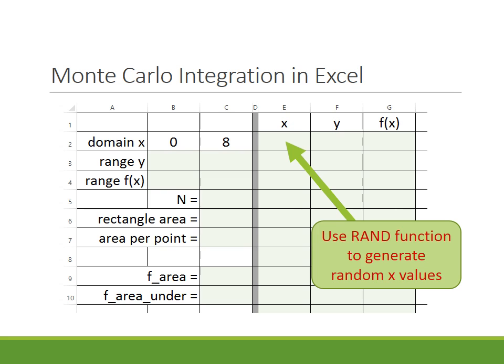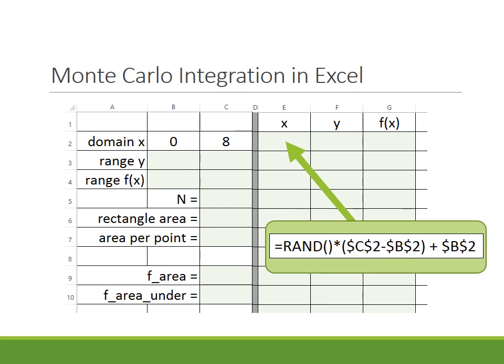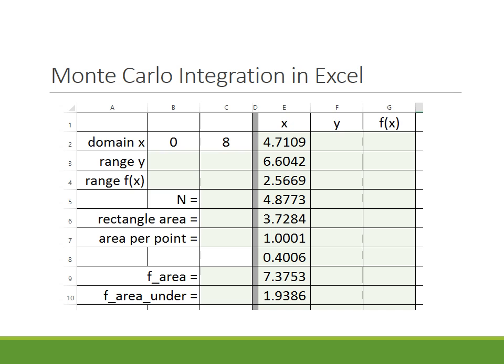First, I want to calculate random values for X between 0 and 8. Using the RAND function, which gives a random number between 0 and 1, the formula will multiply by the width of the domain and then add the beginning of the domain. Entering that function and copying it down gives a sample of random numbers.